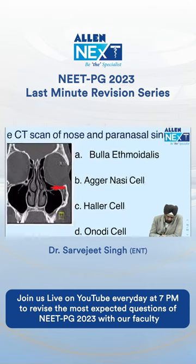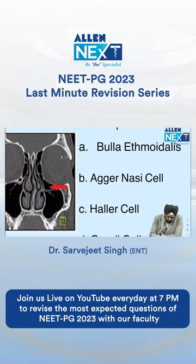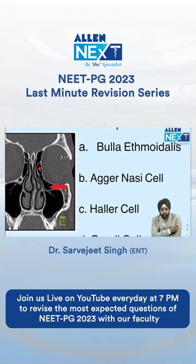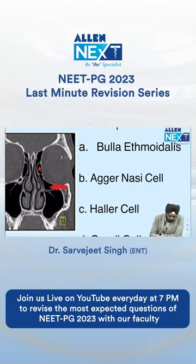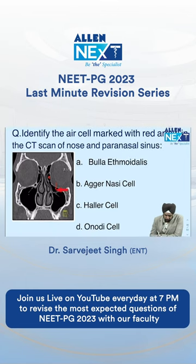This is the infraorbital cell, also known as Heller cell. We can identify over here that this is the most consistent cell, in a point known as Bulla ethmoidalis. And below the Bulla, or below the orbit, we have the infraorbital cell, also known as Heller cell.